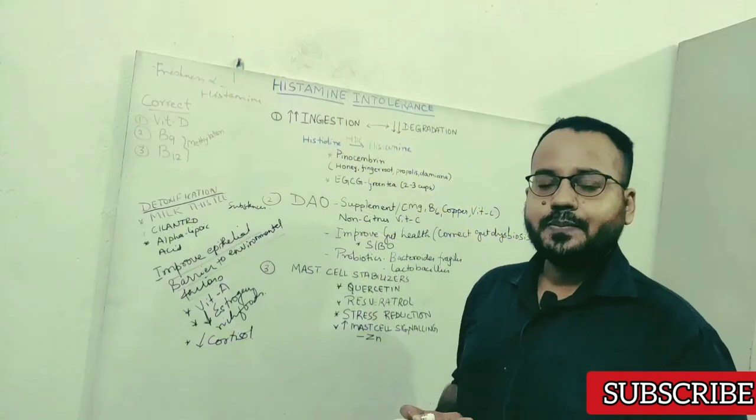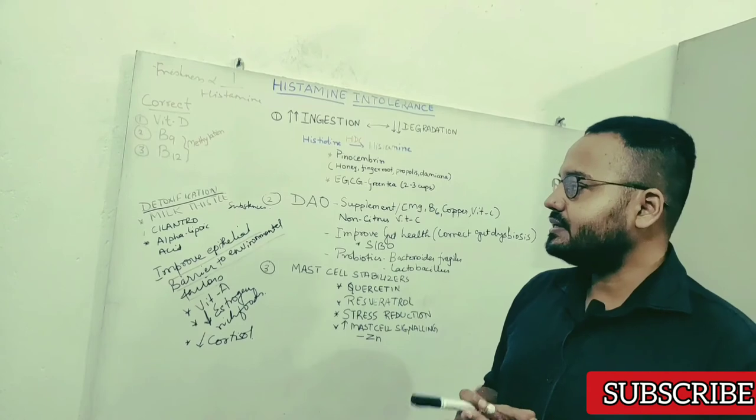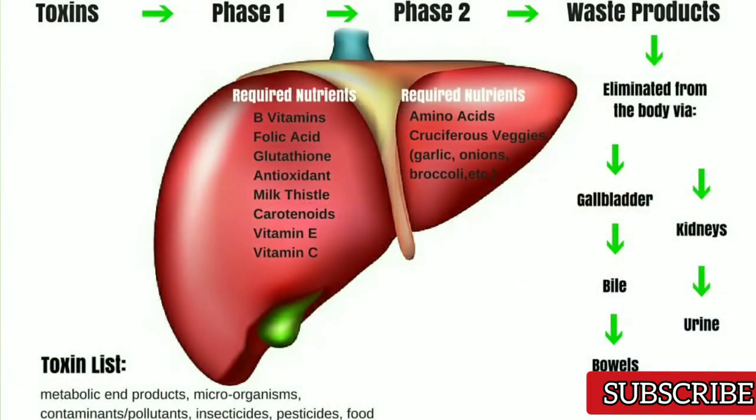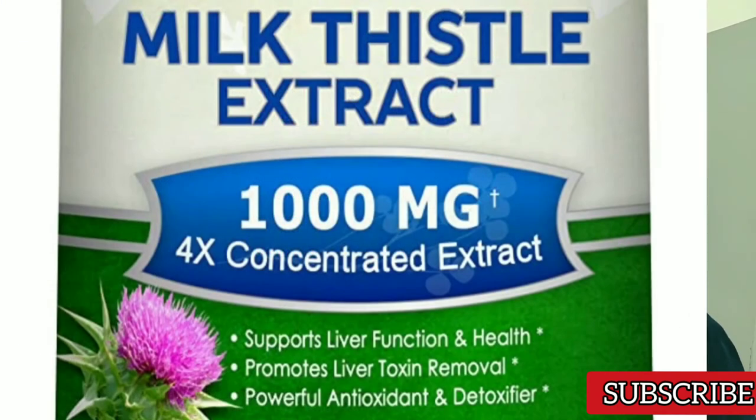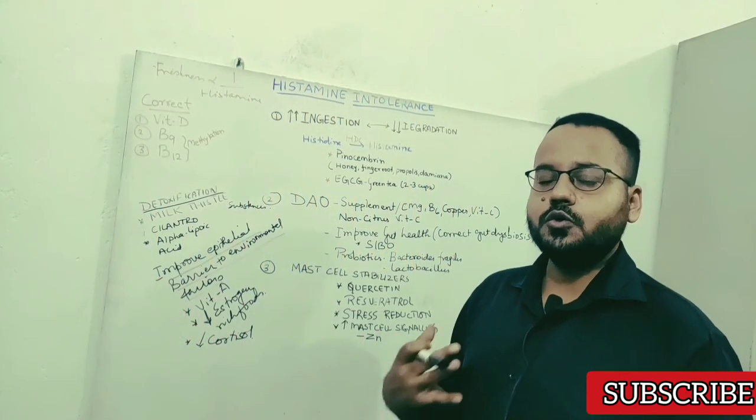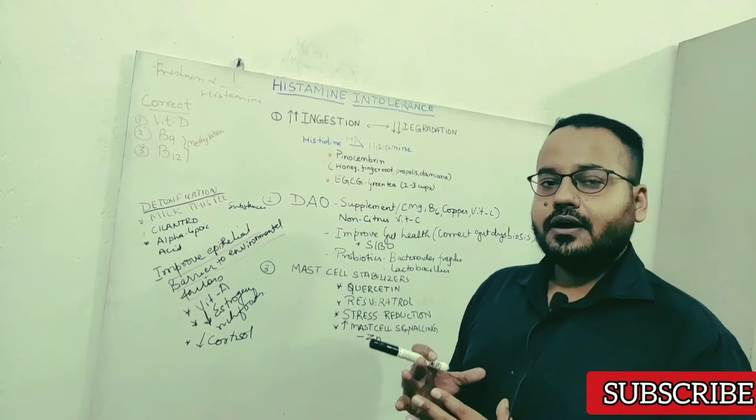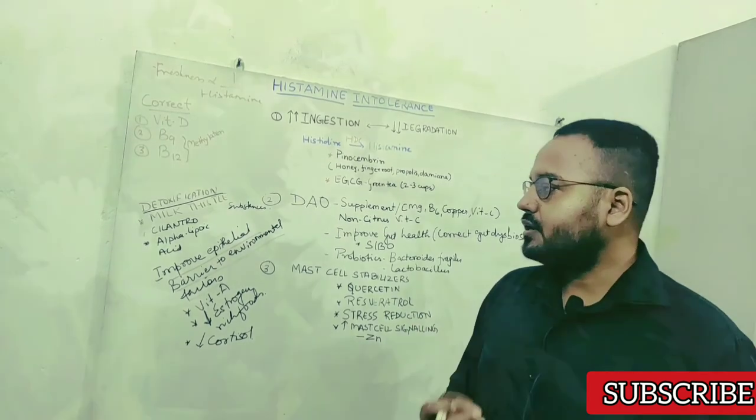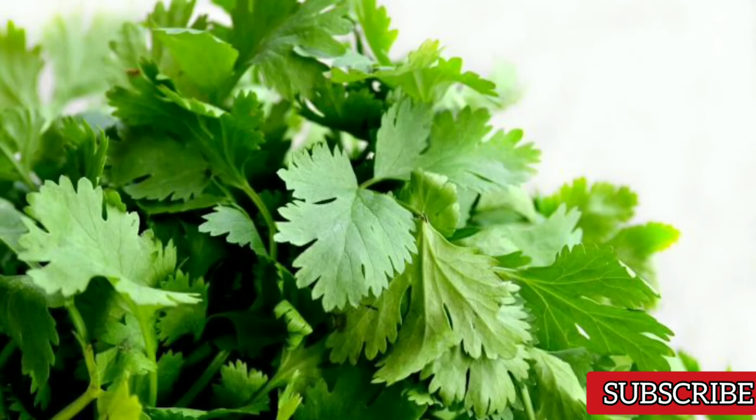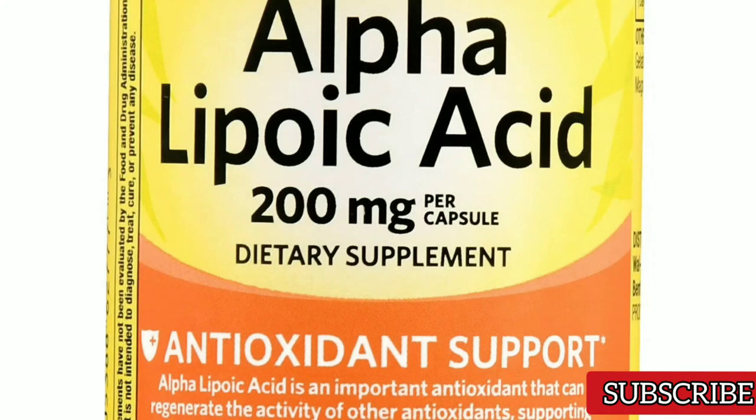Another important aspect of dealing with histamine intolerance is detoxification and you have to keep your liver healthy. Liver is an important organ of detoxification. It is seen that milk thistle is very helpful in detoxifying your liver because of silymarin which is anti-inflammatory. So it also boosts your glutathione which is a very protective antioxidant for your liver. Then herbs like cilantro, these are also very beneficial for someone who has histamine intolerance. Alpha lipoic acid, this is also going to detoxify.